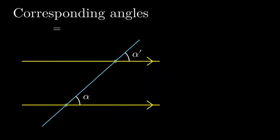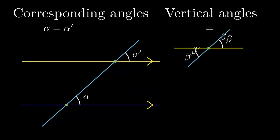Here are corresponding angles. And these are vertical angles. A vertical angle of corresponding angles also has the same measures. Therefore, alpha and beta are the same. And alpha' and beta' are the same too.